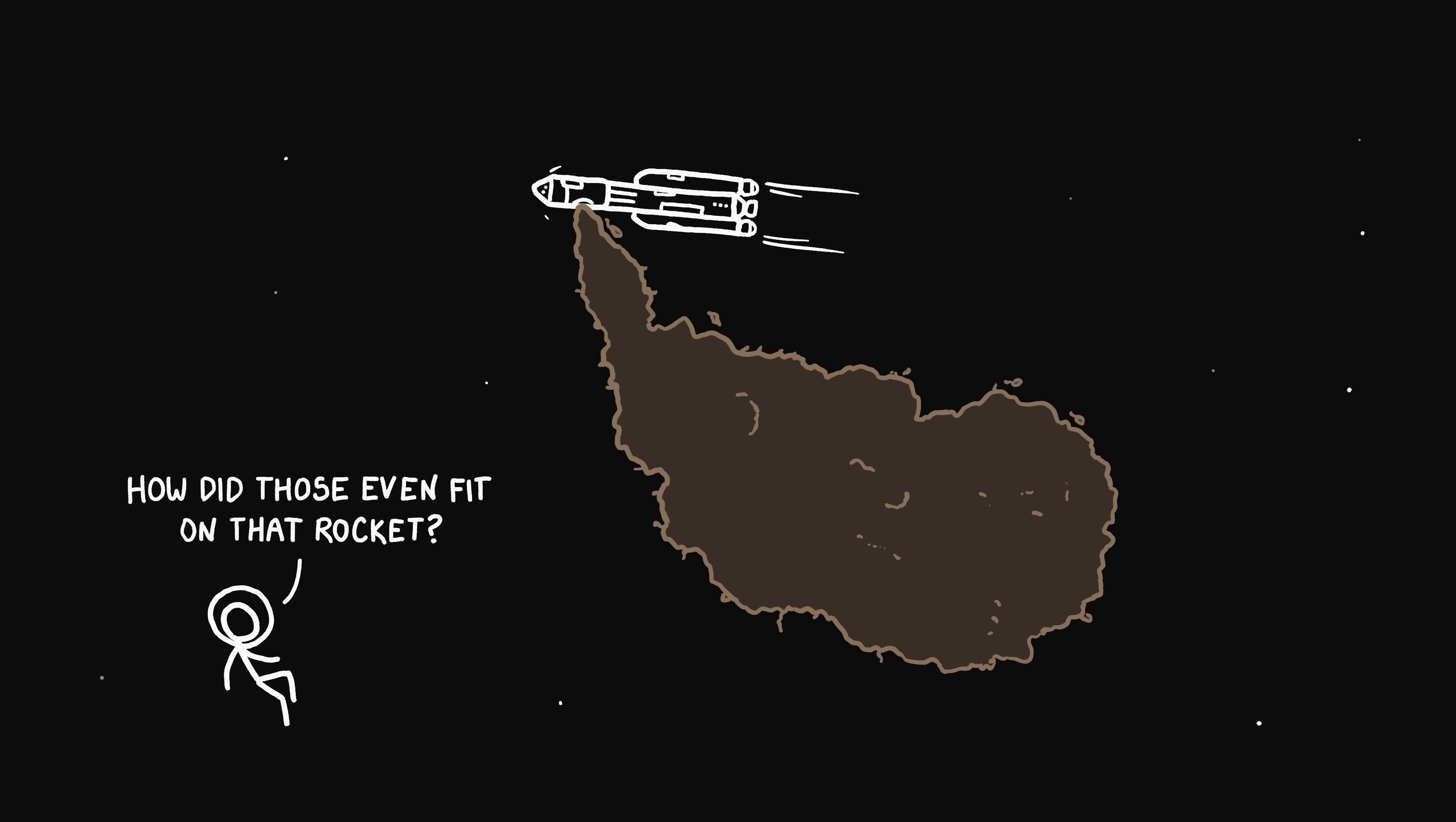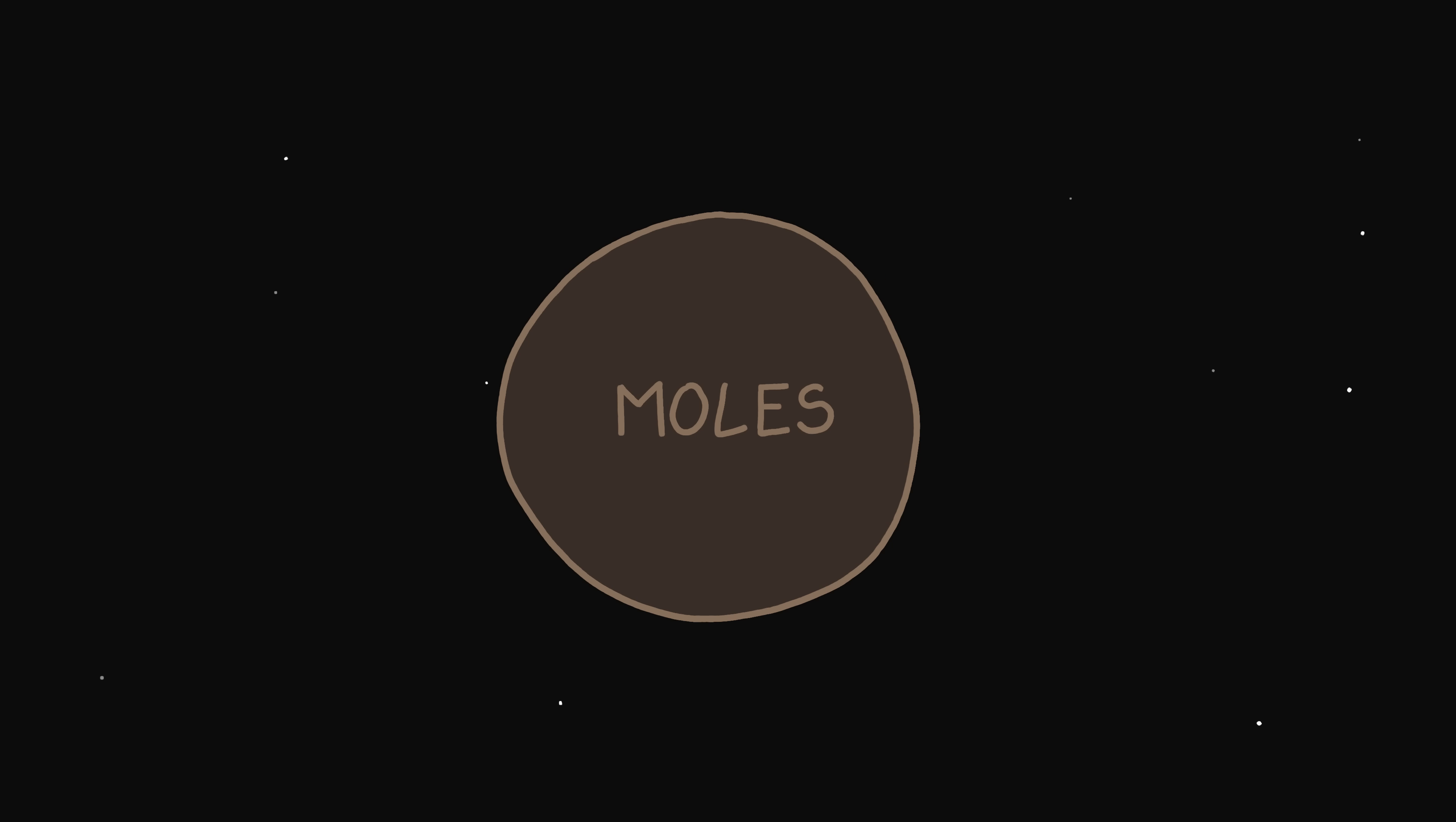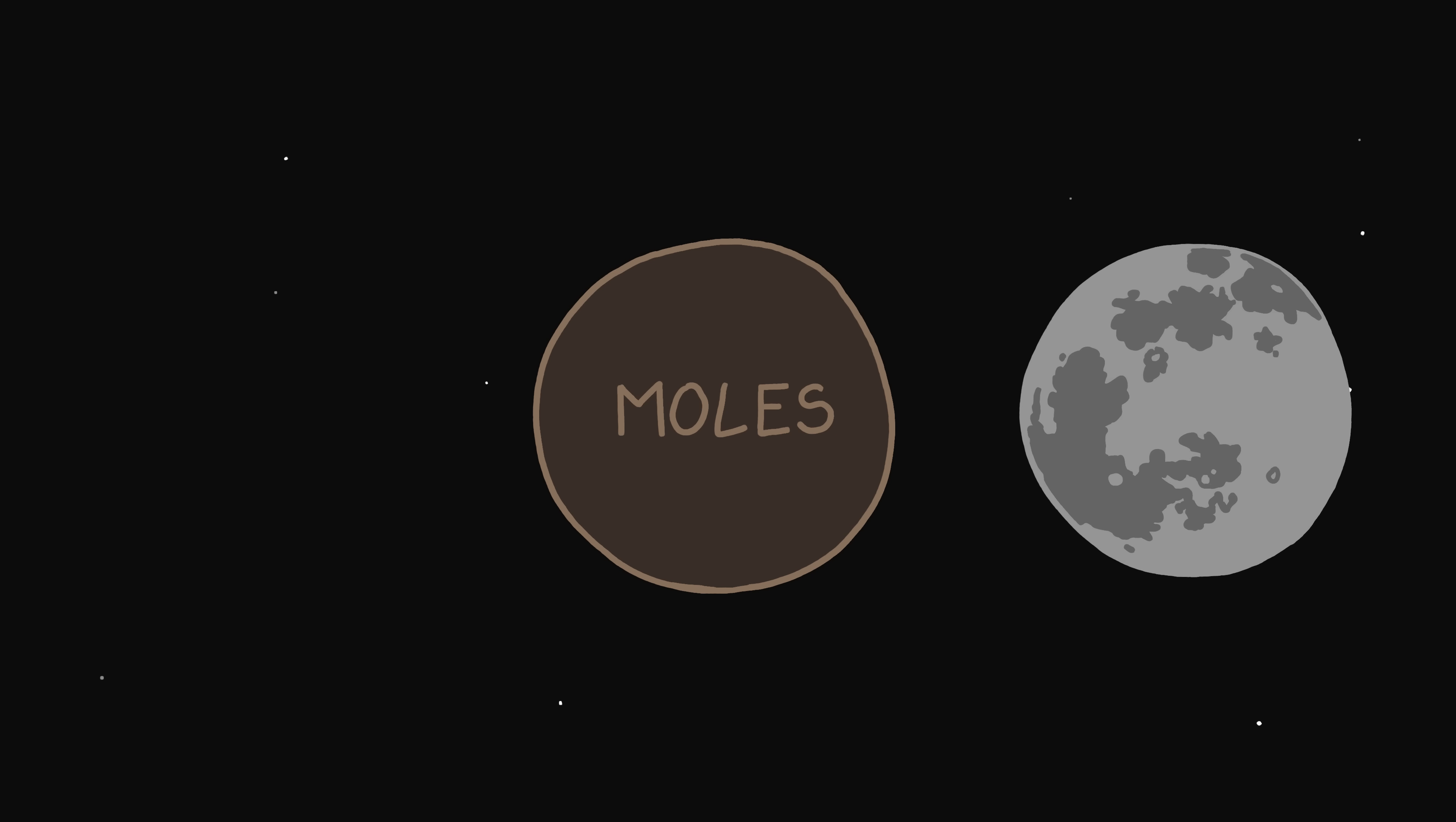Instead, let's gather the moles in interplanetary space. Gravitational attraction pulls them together into a sphere. Meat, being mostly water, doesn't compress very well, so we end up with a mole planet that's a bit larger than the moon.